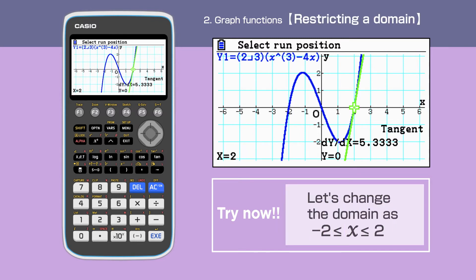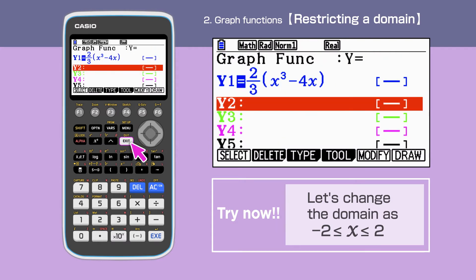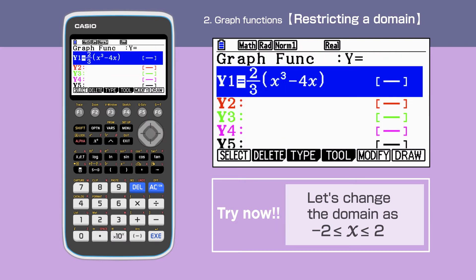Next, we are setting a domain. We will use the same function for this. Go back to the Graph Function screen and highlight y1. We are setting the domain as x is between minus 2 and 2 as an example for this.